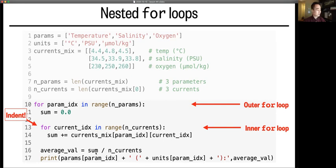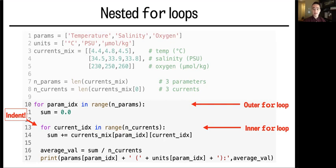And finally, this outer loop will start over again with a second cycle where param_idx now equals one, and that cycle will calculate the average salinity, which is the second variable. That's okay if this is confusing.